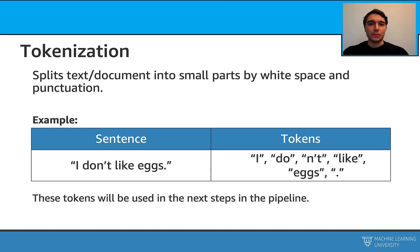Tokenization splits text into smaller pieces. It can use whitespace and punctuation. Here is a simple example: the original sentence 'I don't like X', after we apply tokenization, gives us these tokens. And then we pass these tokens to the next steps in our pipeline.